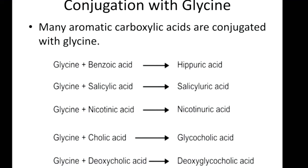Another conjugating agent is glycine, which conjugates various aromatic carboxylic acids. For example, when glycine binds with benzoic acid, it converts it into hippuric acid — the toxic benzoic acid is excreted in the less toxic form hippuric acid. Glycine also conjugates with salicylic acid and other compounds, forming more water-soluble, less toxic products.